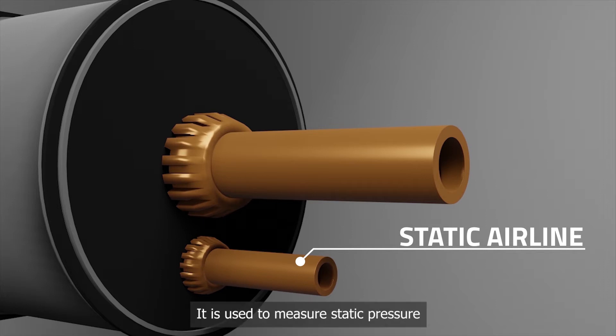Static airline. It is used to measure static pressure, also known as ambient pressure, that is always present whether an aircraft is moving or at rest. It is simply the barometric pressure in the local area.